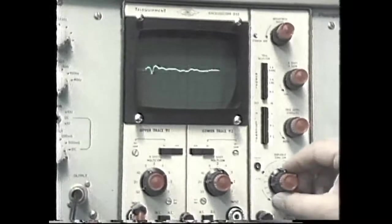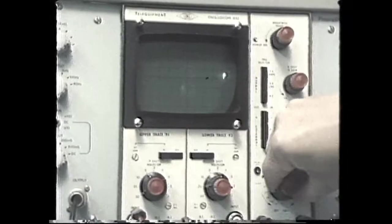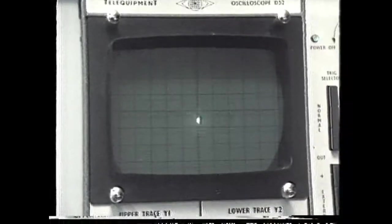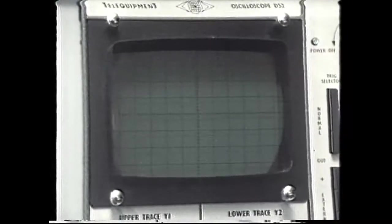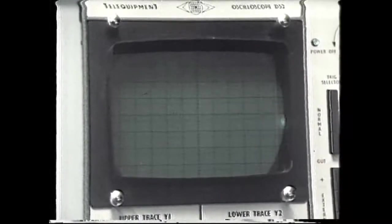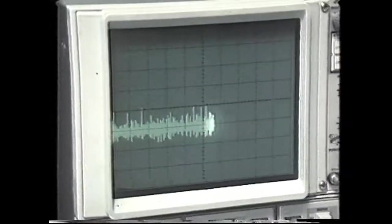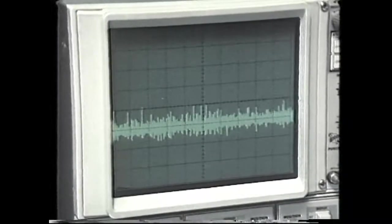We can slow down the scan speed on the oscilloscope so that we get this on the screen. And here it is, as it appears on the storage screen.